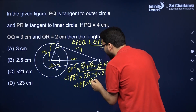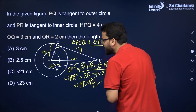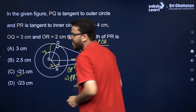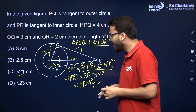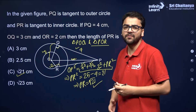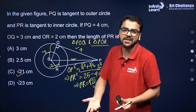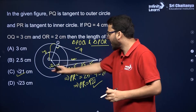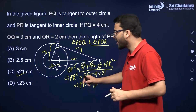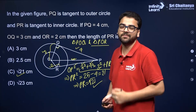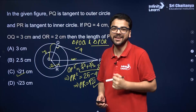You get two values but you neglect the negative one because distance cannot be negative. So PR equals √21 centimeters. Let us take the next MCQ.